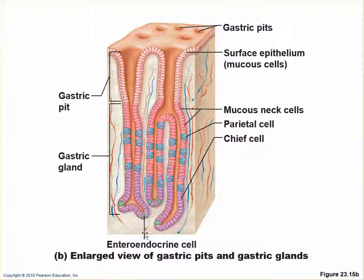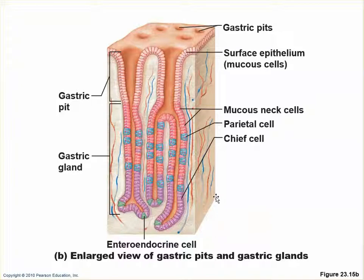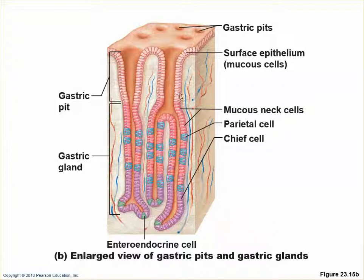Enteroendocrine cells control processes in the rest of the alimentary canal based on stimulation in the stomach. Parietal cells make hydrochloric acid for denaturing proteins and also produce intrinsic factor, which lets us absorb vitamin B12. The mucus neck cells secrete an acidic mucus that is partially protective and partially lubricating. The surface mucosal cells are almost entirely goblet cells, and they secrete an alkaline mucus that protects the stomach from auto-digesting.